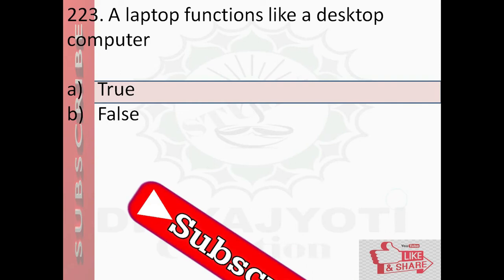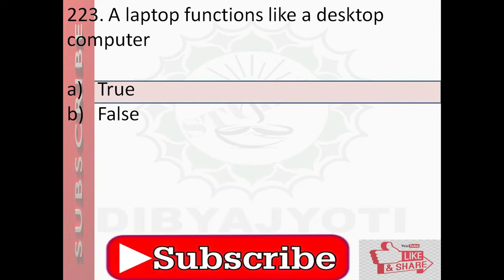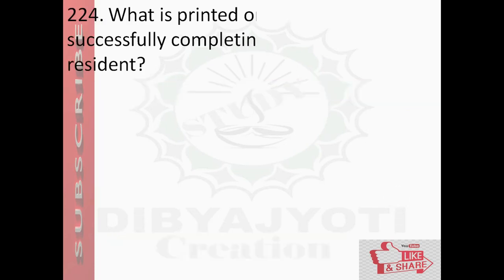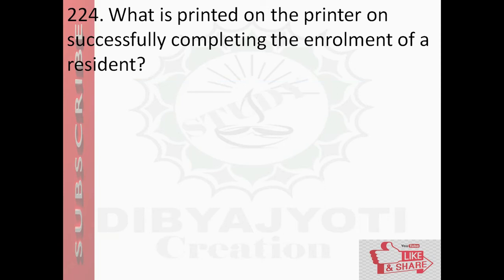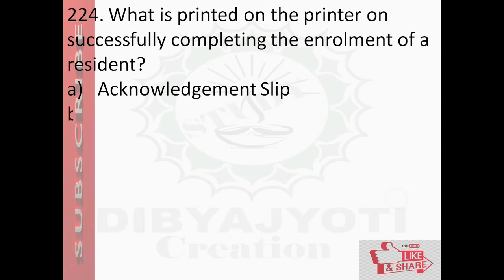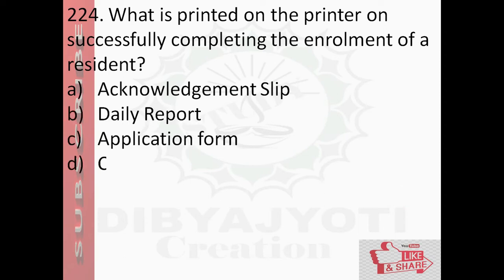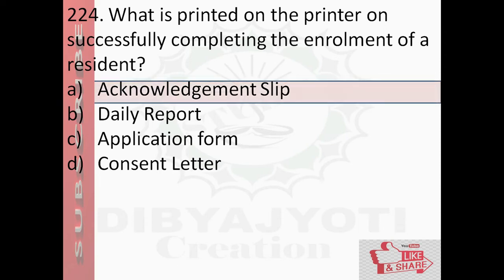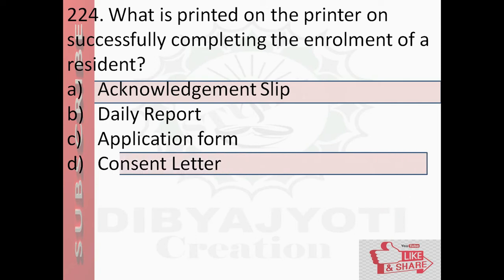Question number 224: What is printed on the printer upon successfully completing the enrollment of a person? Options are: option A, acknowledgement slip; option B, daily report; option C, application form; option D, consent letter. The answer is option A, acknowledgement slip, and option D, consent letter.